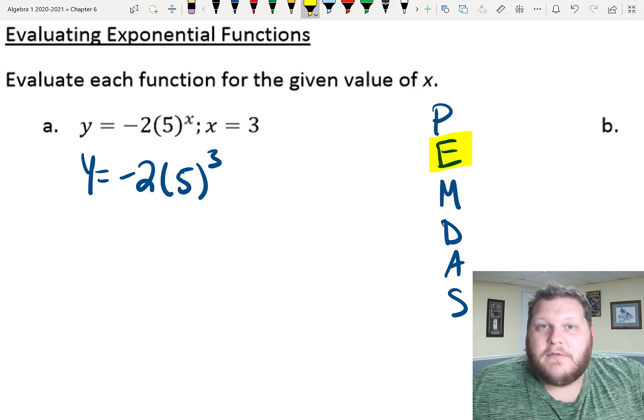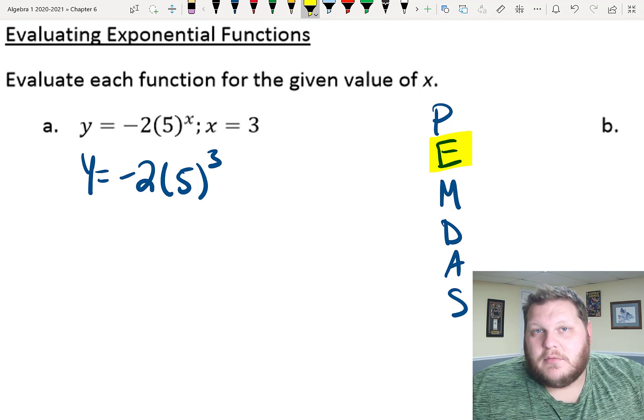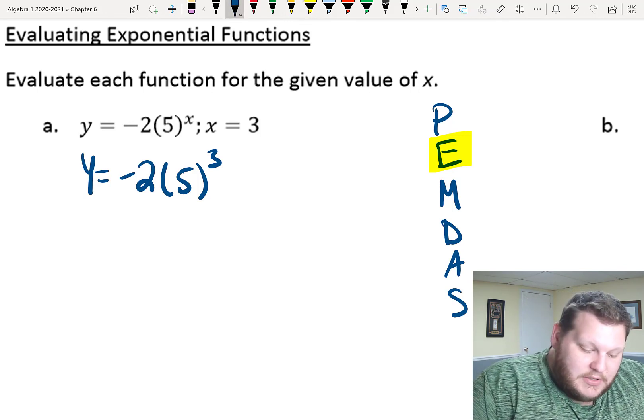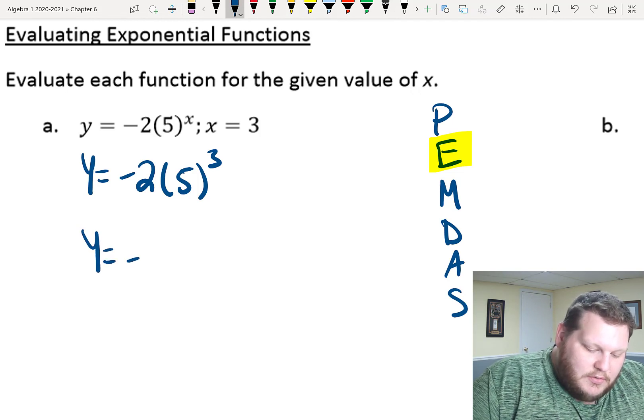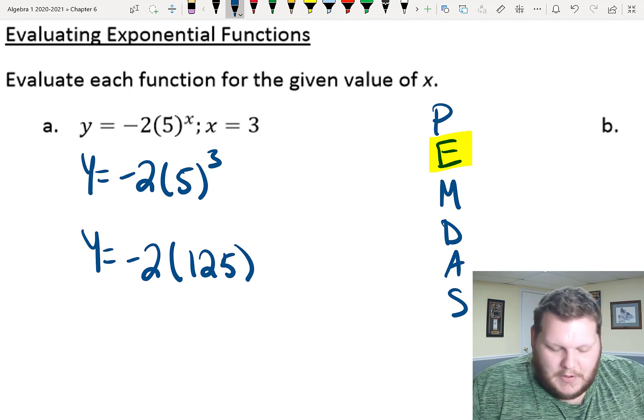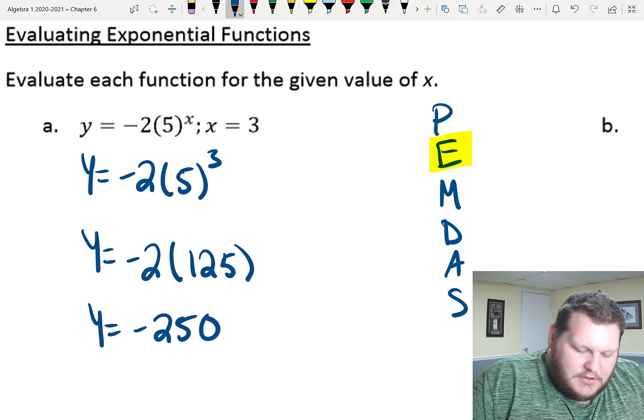So, here, I have to make sure I do five to the third power before I multiply by negative two, because then we'll get very, very different answers. And we have to follow order of operations. So, we have to do five to the third power, which is 125, and then we multiply by two to get negative 250.